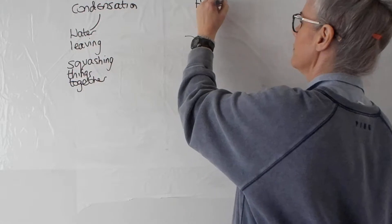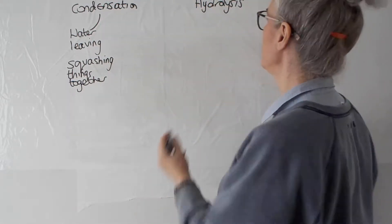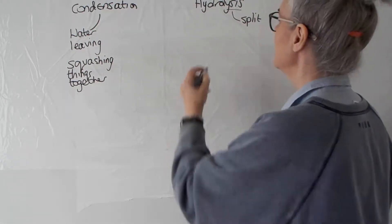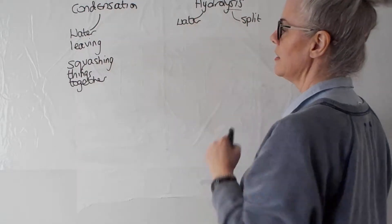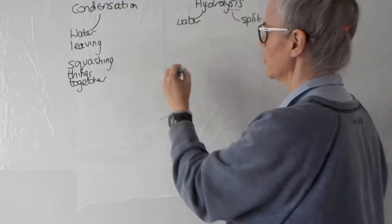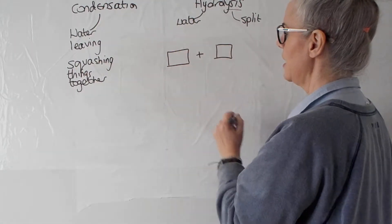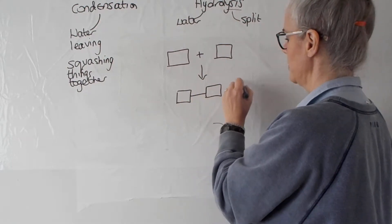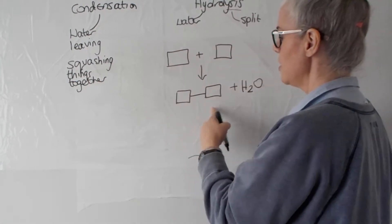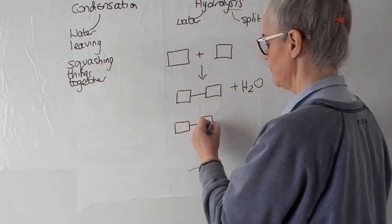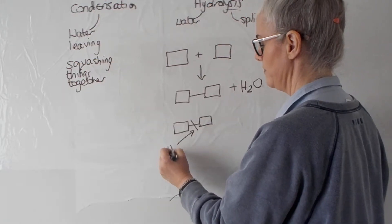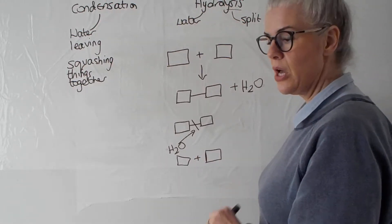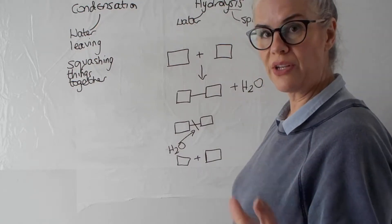Hydrolysis — 'lysis' means to split, so anything with 'lysis' in it involves splitting. 'Hydro' means water, so hydrolysis is splitting something using water. In a condensation reaction we bond things together and remove water, and in hydrolysis we split those two things using water, ending up with the original two things again. We'll use alpha glucose as our example.